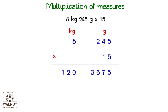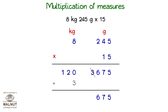We know that 1000 grams is equal to 1 kg. Here we have 3 kilograms which we can club with the kilograms, and keep the remaining grams. We add up the kilograms and that is our answer.